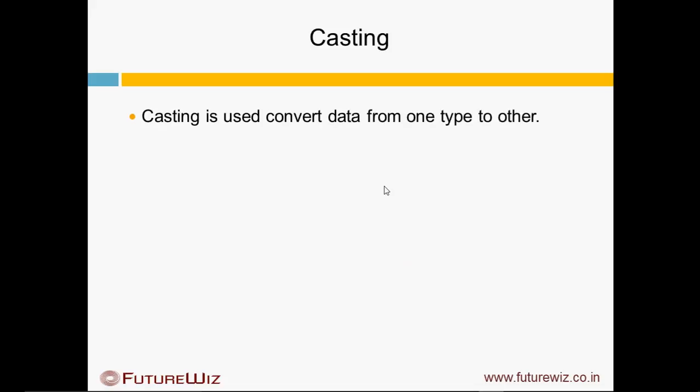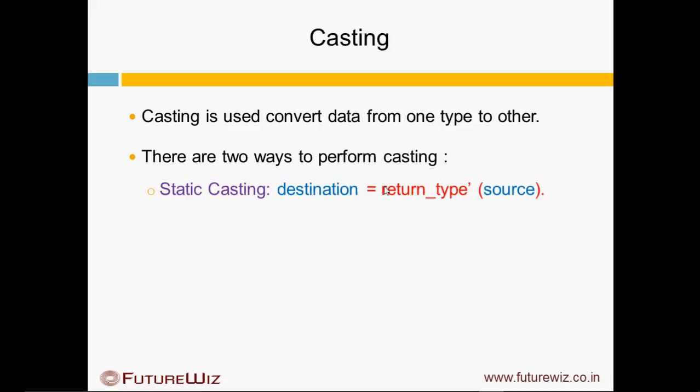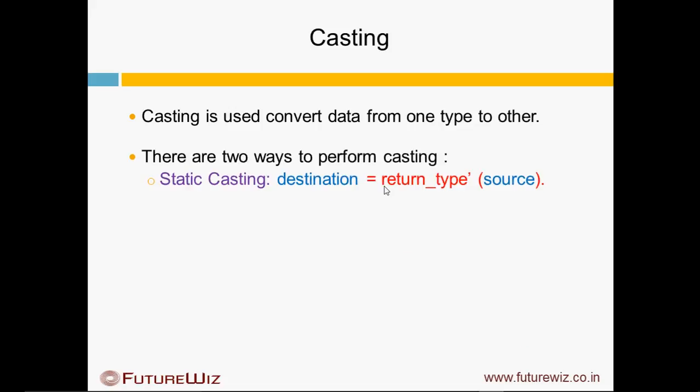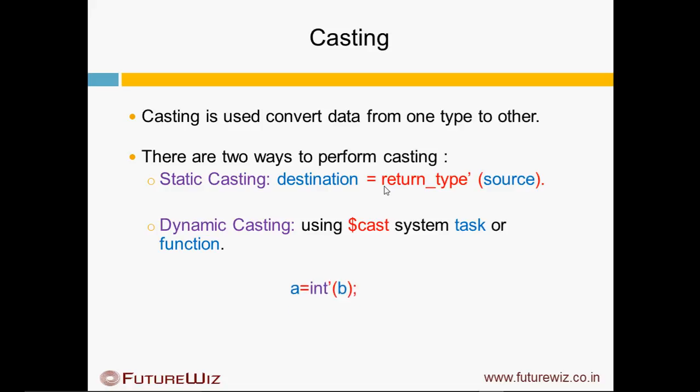Casting is the concept of converting one Data Type to another Data Type. There are two ways of performing that. One is called Static Casting, in which we provide the Destination and the Return Type along with the Source. We also have Dynamic Casting, which is done with the help of Dollar Cast. The first example shown is for Static Casting, and the second one is for Dynamic Casting.